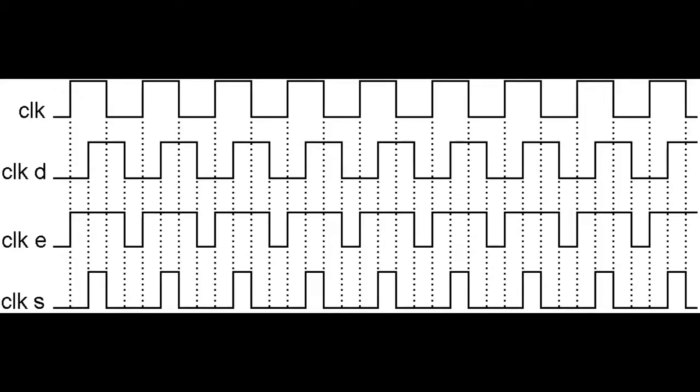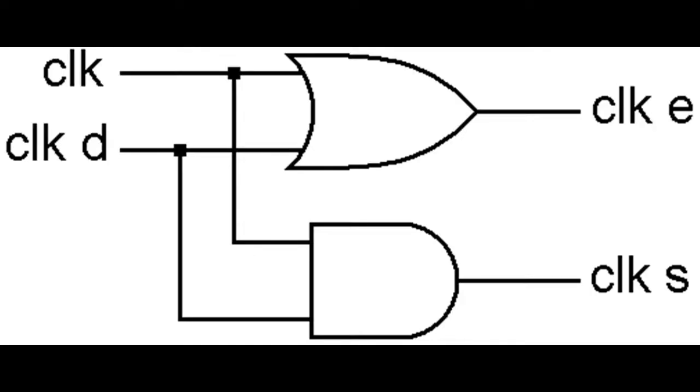So in the end it will give us a diagram like this where we will have our clock, our clock D, our clock E and our clock S and you can see the relative timings of each of them. Now creating clock E and clock S out of clock and clock D is quite easy as shown in the book. You basically have to OR clock and clock D together to create clock E and AND them together to create clock S.